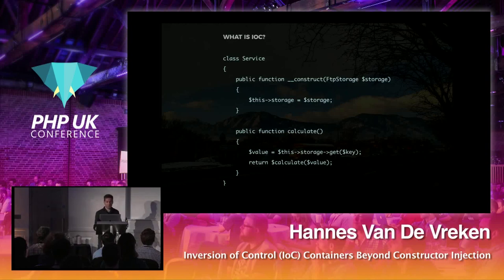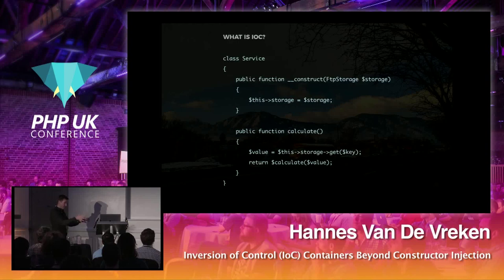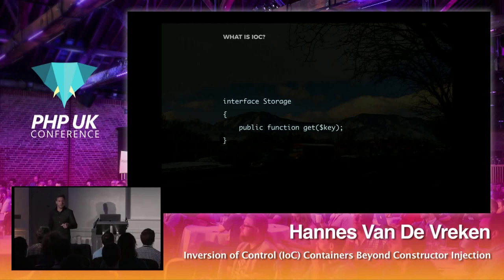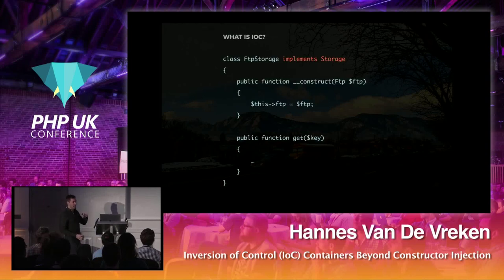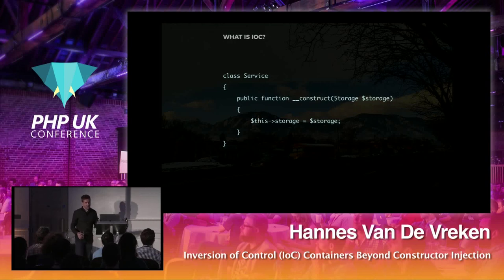The next step is introducing interfaces. The service class still depends on the super-detailed FTPStorage class, which is super low-level and specific to this use case. We might want to depend on something more abstract — maybe a storage interface. It's a super simple refactoring step: introduce an interface, make FTPStorage implement the interface, and refactor the service class to type-hint on storage instead of FTPStorage. What we're left with is two classes and one interface.